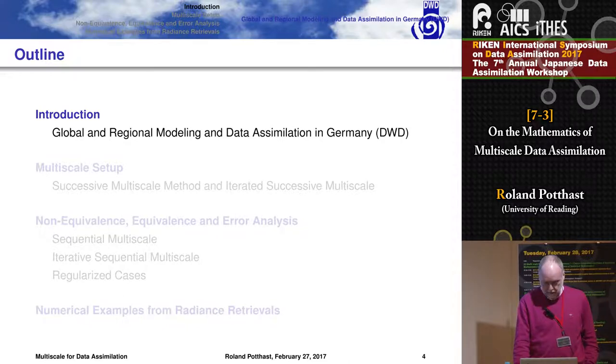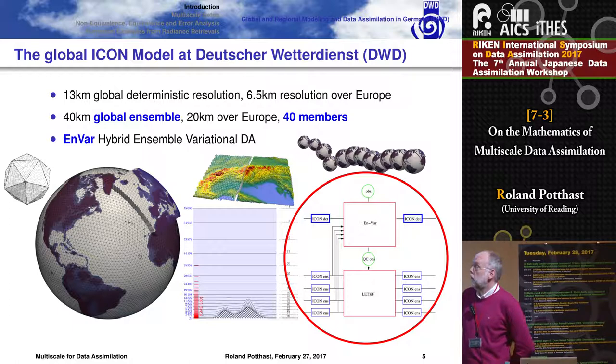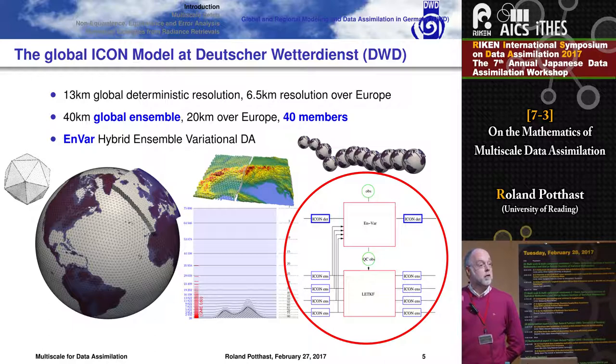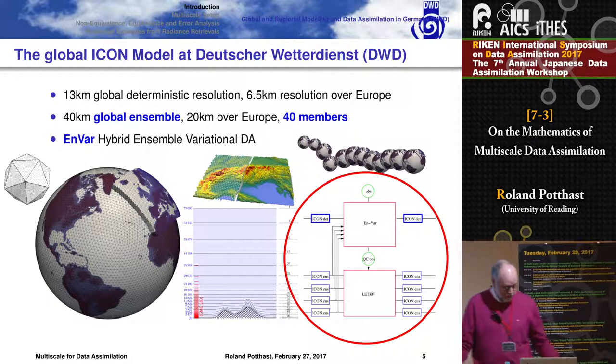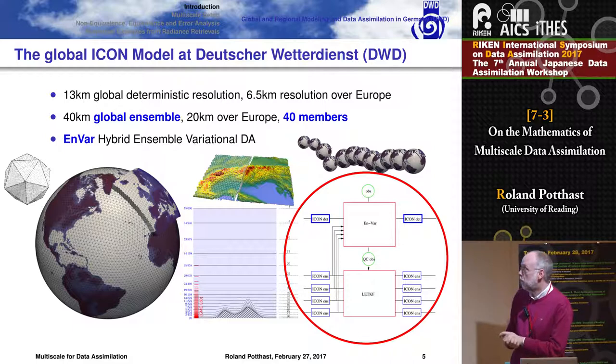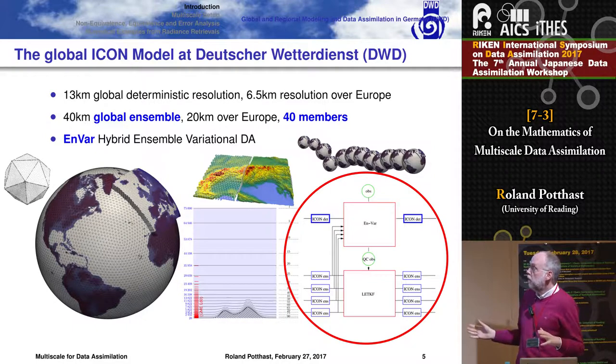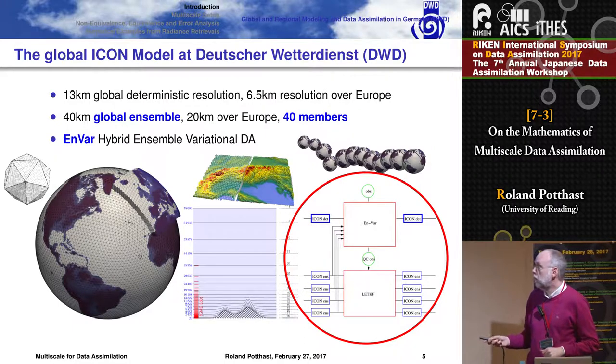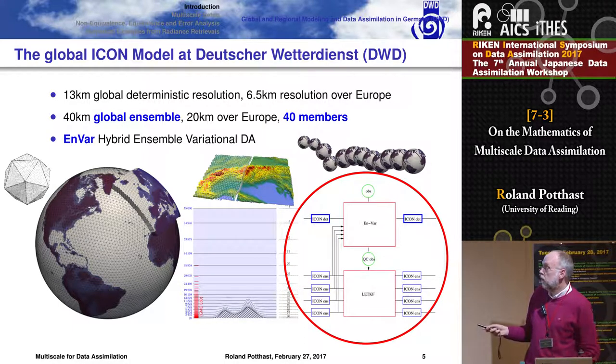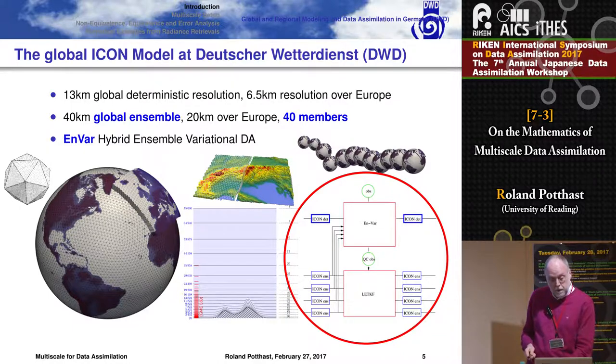In the last years, we have an operational system now with an ensemble data assimilation, a hybrid ensemble data assimilation system which basically consists of an LETKF and a 3D-Var type variational system. The core algorithms are basically taken from Brian Hunt and his work and the Maryland group. This is run on a global scale, 13 kilometers resolution, 6.5 over Europe. We have a 40 kilometer global ensemble, 20 kilometers over Europe, 40 members, and then a system which couples the LETKF with a variational method.